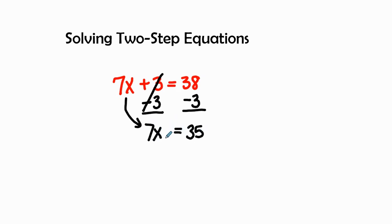The x is still not by itself, so I need to see how the 7 is attached. Well, the 7 is attached by 7 times x, and the inverse operation is division. So I'm going to divide both sides by 7.